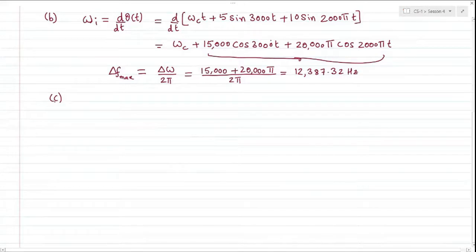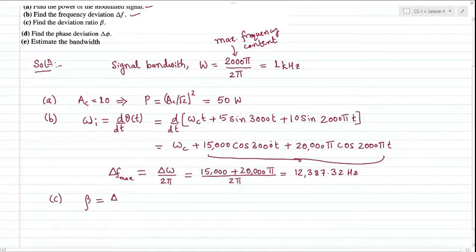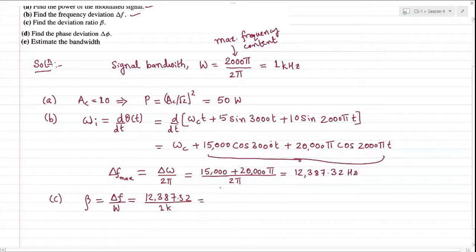Part three: calculating the deviation ratio beta, also called modulation index. Beta equals delta f over W, where W is the maximum frequency content in the message signal — in this case 1 kHz (the signal bandwidth). So beta equals 12,387.32 divided by 1000, which gives approximately 12.39.